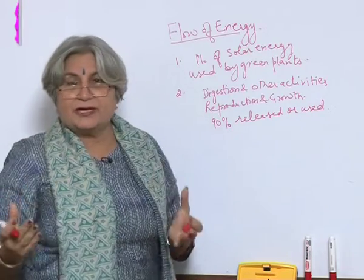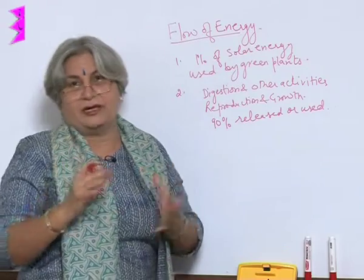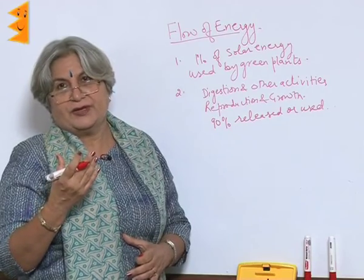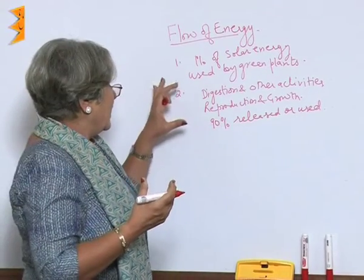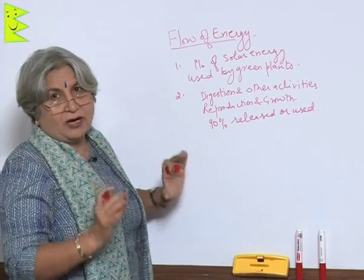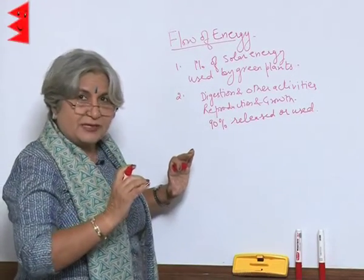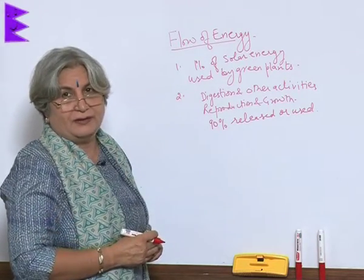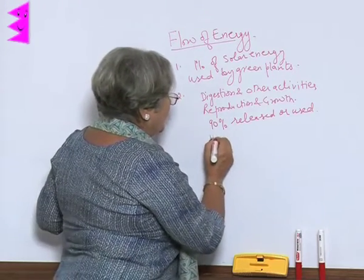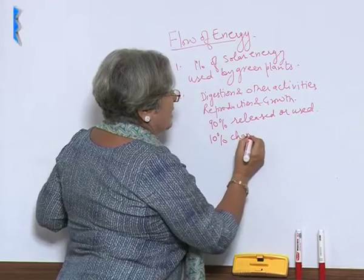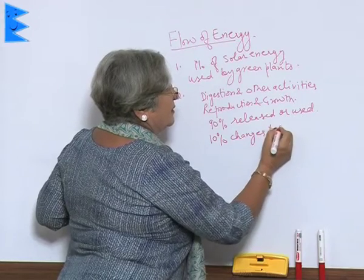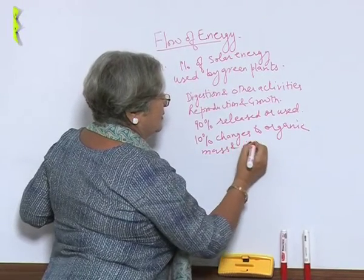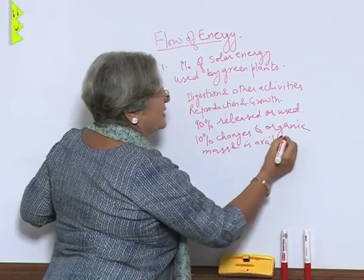So what happens to the remaining 10%? That 10% changes into organic mass and only that much is available to the next trophic level. At the producer level, plants got 1% of solar energy, and out of that, about 10% was available to the consumer level. So 10% changes to organic mass and is available to the next level.